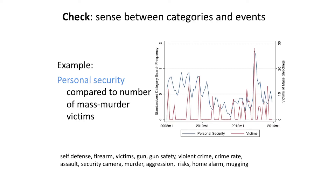This example is a comparison of a category composed of words related to personal security — words like gun safety, guns and firearms in the US, self-defense, home alarm, and security cameras. We see a huge spike at the end of 2012, which corresponds to the Sandy Hook massacre in the US. The red line I'm showing is the number of victims of mass murder attacks in the US. It's not perfect, but it shows we're not too far away from reality in the construction of our categories.